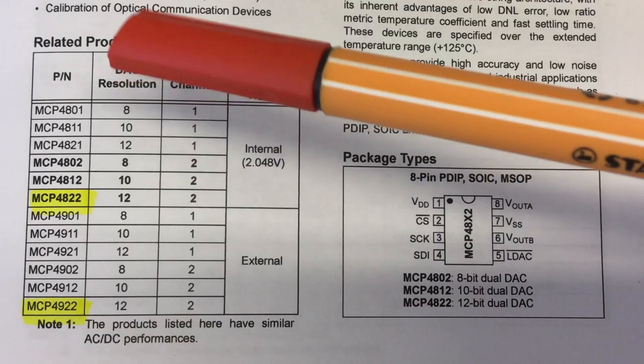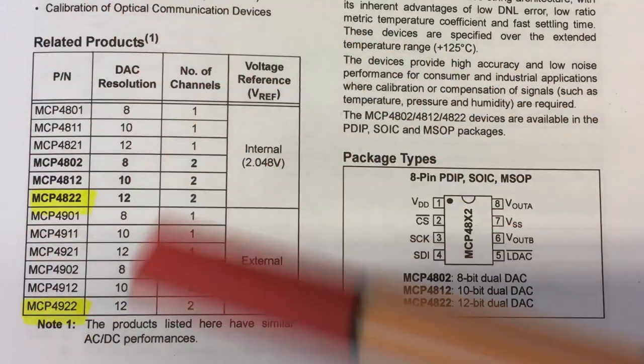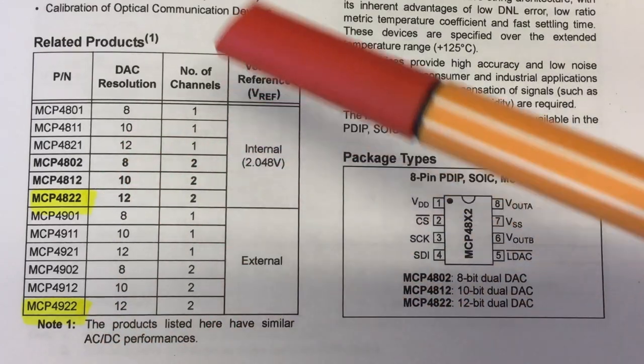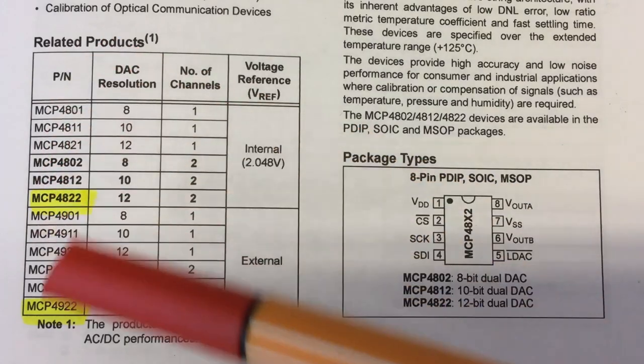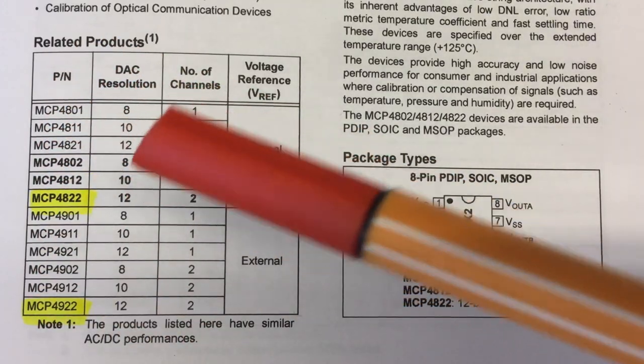And you get converters with internal and external reference. And the interesting thing is, that's the reason there are 12 different types available. You can get each and every combination. So you can really choose a chip really tailored for your application.